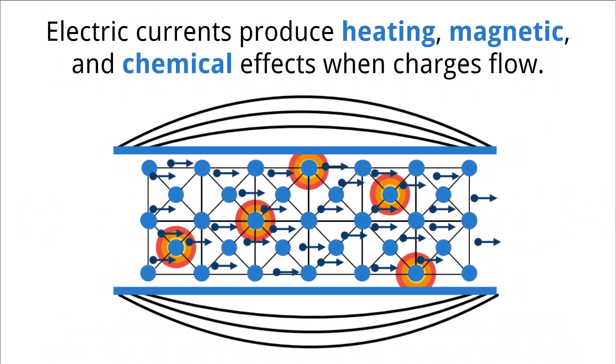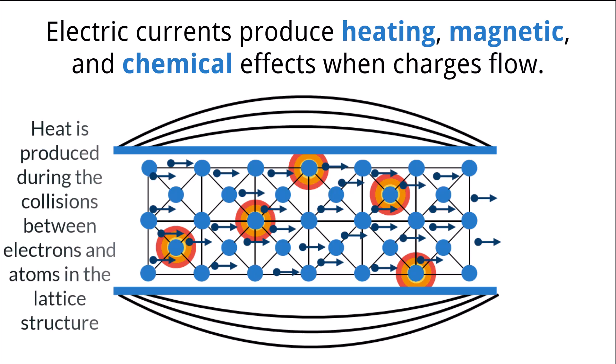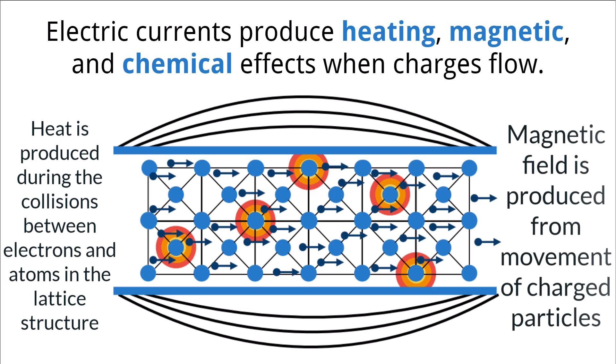As electrons move, they produce several different effects. Heating is an effect of electron movement when energy is transferred to atoms in a material. This can often be felt with electronic devices that have been on for a long period of time — they produce heat as an effect of the movement of the electrons. There is also a magnetic effect due to the movement of electrons.